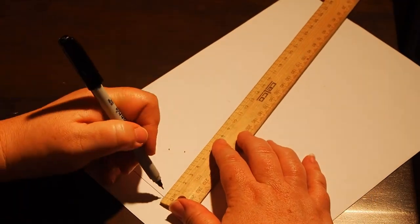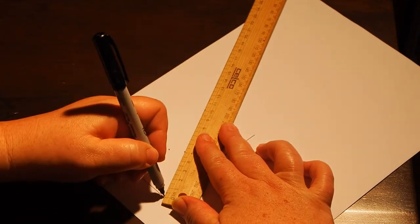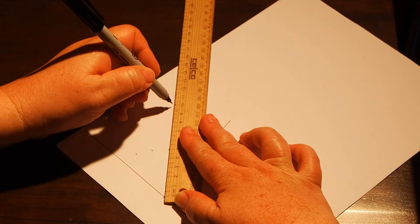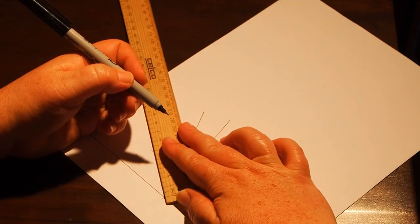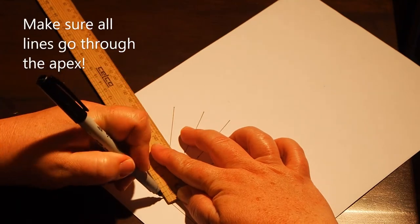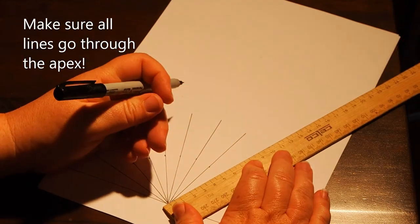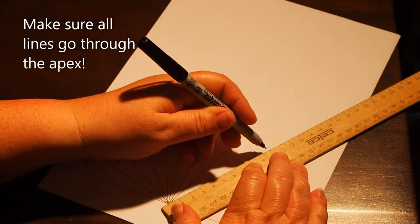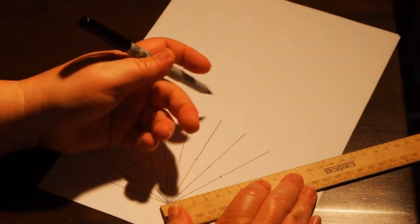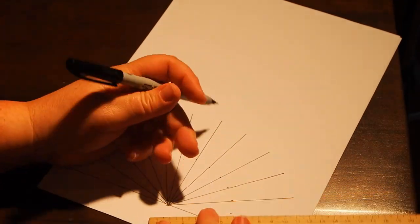Then draw a line 10 centimeters long at each angle, being careful to make sure you line up your ruler each time to ensure the line goes through the apex point. This will give you a better result at the end. We've sped it up a little, but take your time to make sure that you're accurate. That's the hard part done.